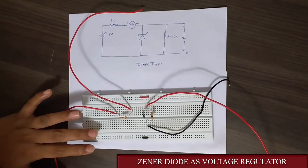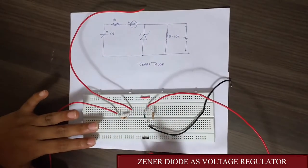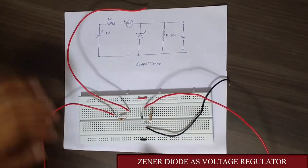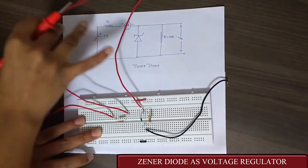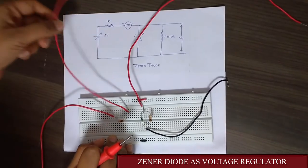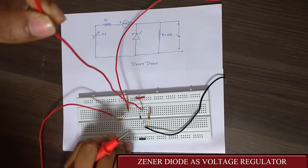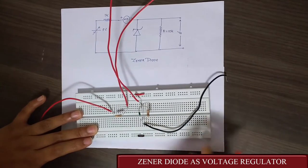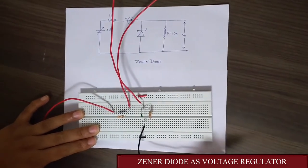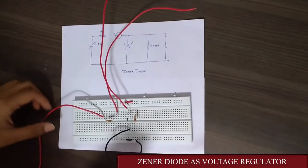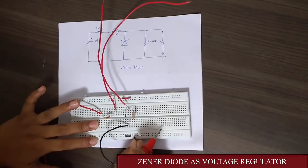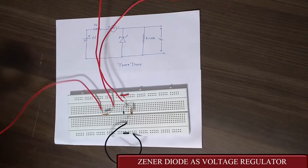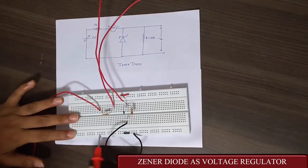We know that the zener diode is used as a voltage regulator. To check whether it can regulate voltage or not, we have set up this circuit. These two wires will be connected to the milli ammeter — one goes to the positive terminal and the other to the negative terminal. The 10k resistor is connected in parallel with the zener diode, and this is the output pin. The 1k resistor is also connected here, the input is 5 volts, and the ground is connected here.